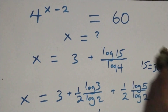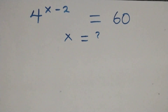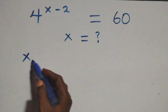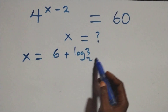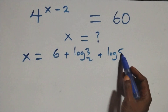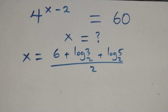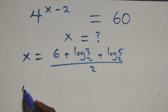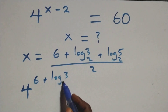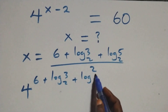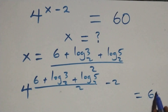Let's check if this satisfies the given problem by substituting the value of x. We substitute x equals six plus log three base two plus log five base two, all over two. So we have four raised to power: six plus log three base two plus log five base two, all over two, minus two — equals sixty.